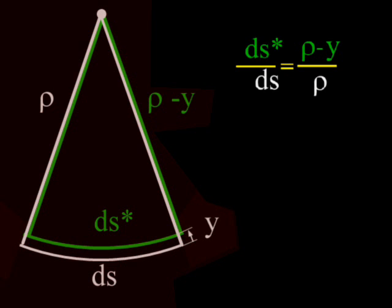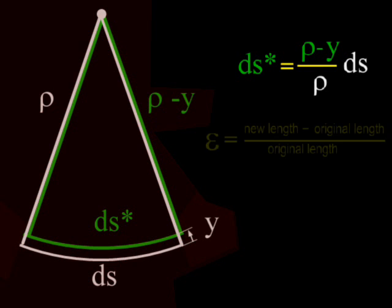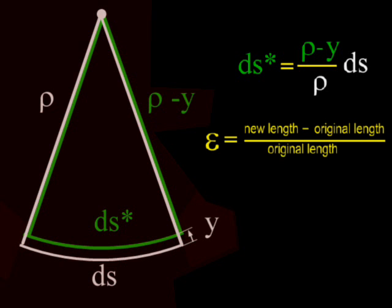Rearranging gives ds star equals rho minus y over rho times ds. The strain epsilon is equal to the change in fiber length, or the new length minus the original length, divided by the original length. Thus we have epsilon equals ds star minus ds over ds.